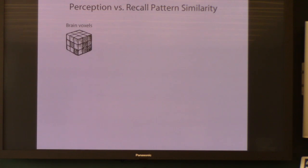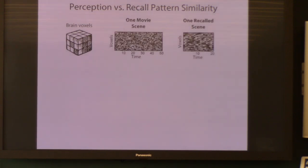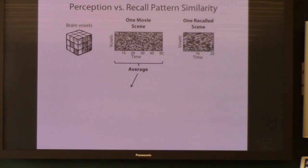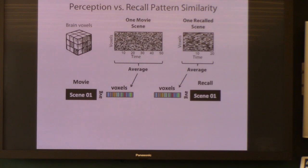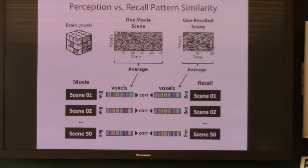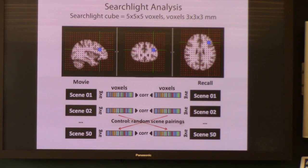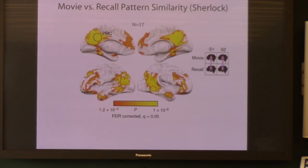To analyze the brain data for both of these datasets, we look at similarity between patterns during perception — during the movie — and during the spoken recall, scene by scene. You take a little piece of the brain and unwrap those voxels into a matrix: voxels on the y-axis, time on the x-axis. You get the data for each individual movie scene and then each scene during recall. In this first-pass analysis, we average across time to get a single vector of values for each movie scene and one for each recalled scene, then calculate the correlation between those. At each individual scene in the recall, we compare to the noise baseline of correlations between random scene pairs, doing this in every region of the brain as a searchlight.